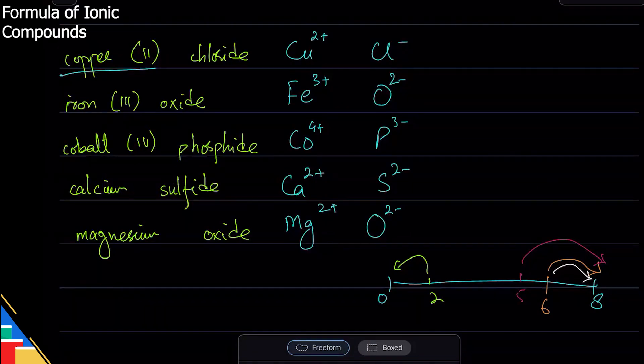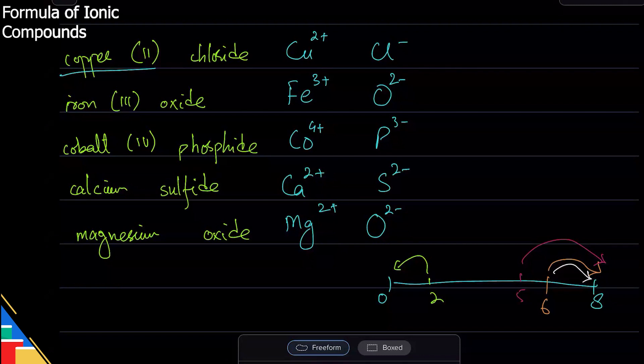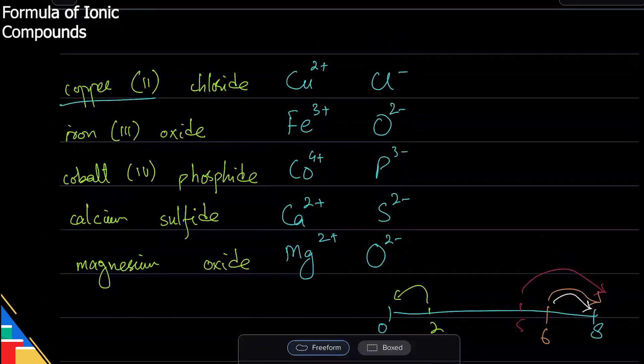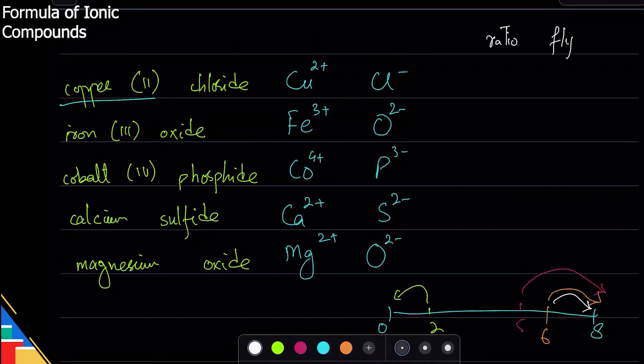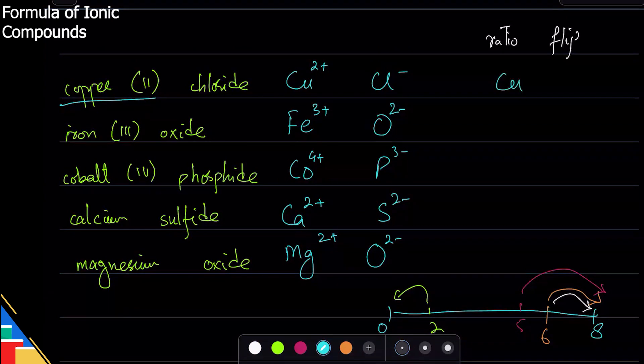Now the next thing is how do you write the formula? For the formula, we have a method that I like to call ratio flip. How does that work? You simply take the ratio of charge and, as the name suggests, you flip it. So Cu and Cl - the ratio is two here, one here.